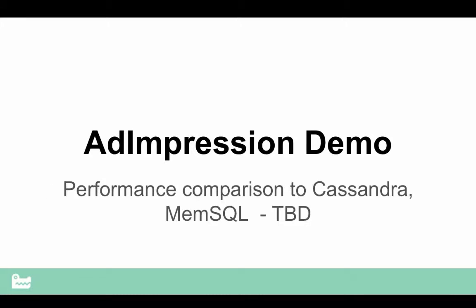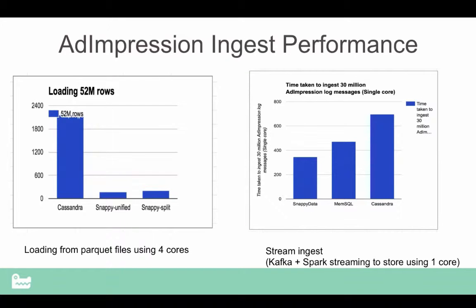So the question is how fast can you do things? I just ran it on my laptop. Obviously the product is still early stage, but as you can see, the time taken to ingest using a single stream processor inside Spark — basically consuming with one single core — we consumed about 30 million ad impression log messages in close to 200 to 300 seconds. MySQL takes roughly 450 to maybe 500 seconds, and it actually takes close to 700 seconds to consume it.